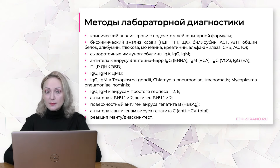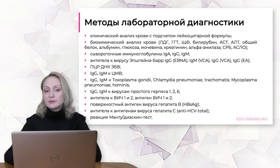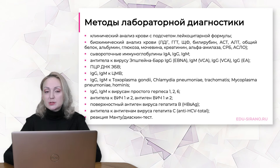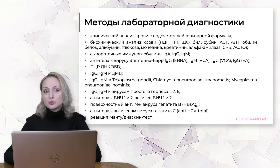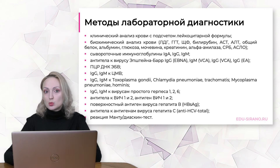Также хорошо сделать анализы на ВИЧ, сифилис, гепатиты и провести диаскин-тест или реакцию Манту, если она не была сделана в недавнее время. Туберкулёз перестал быть исключительно социальным заболеванием, и иногда мы сталкиваемся с туберкулёзом лимфатических узлов. Необходимо помнить, что подростки могут быть сексуально активны или использовать инъекционные наркотики, и у них может быть ВИЧ-инфекция. Поэтому при подозрении на сифилис или ВИЧ у подростка необходимо назначить соответствующие анализы.